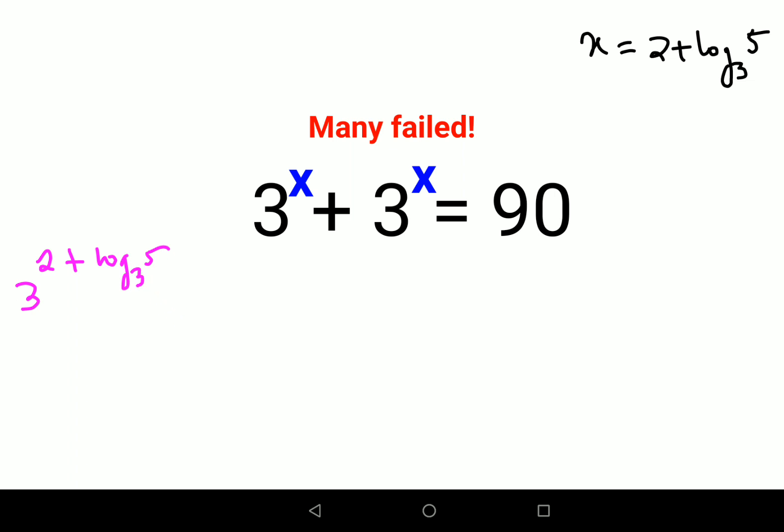Please understand, whenever in any base you have an index which has an addition sign, you can split the index like this: a^m × a^n. So here also, instead of doing 2 + log 5 base 3, I can directly do 3^2 × 3^(log5 base 3).